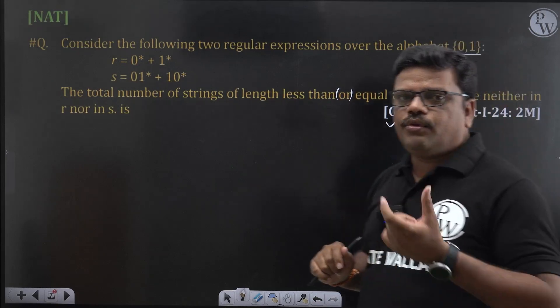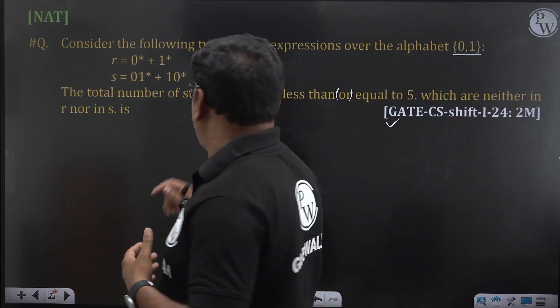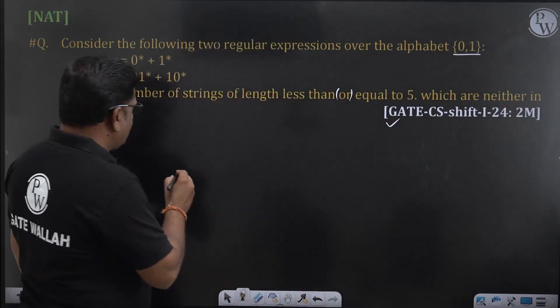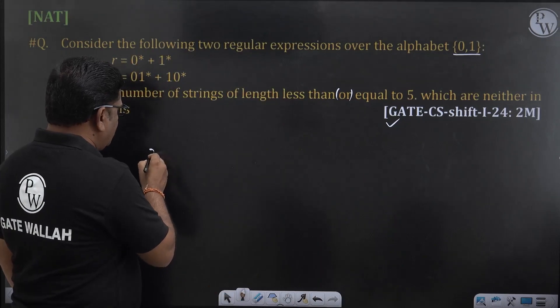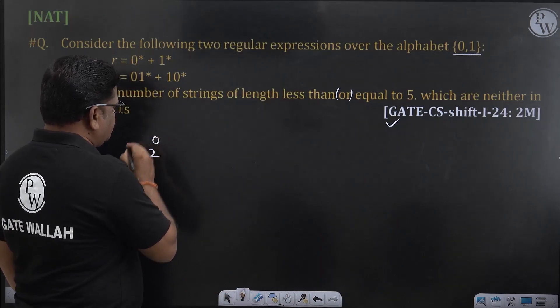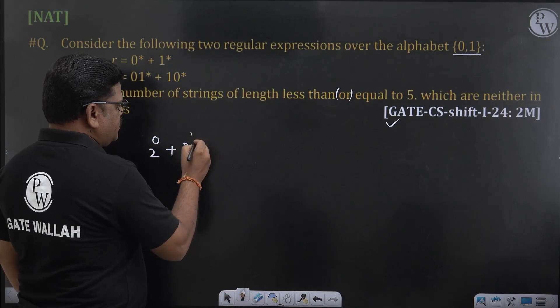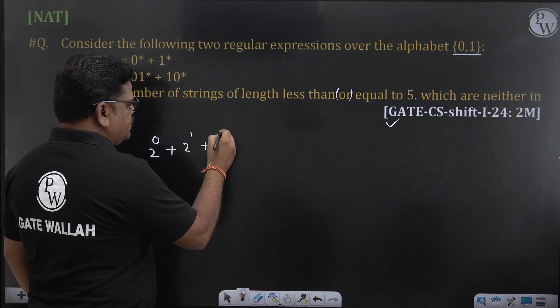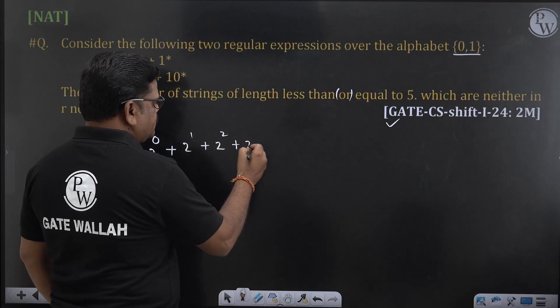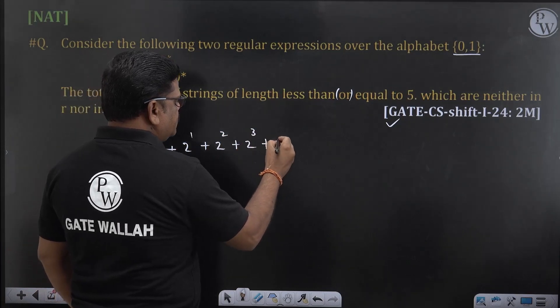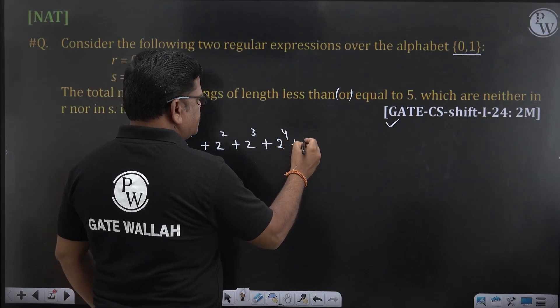First let us see over alphabet {0,1} how many 0 length strings possible? Number of 0 length strings is epsilon, 2^0. 1 length strings 2^1, 2 length strings 2^2, 3 length strings 2^3, 4 length strings 2^4, 5 length strings 2^5.